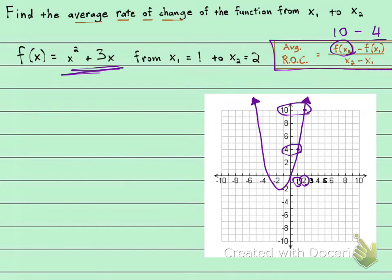And that's going to be divided by the x₂, which is 2, minus the x₁, which is 1. And what you should get is 6 over 1, which is 6.